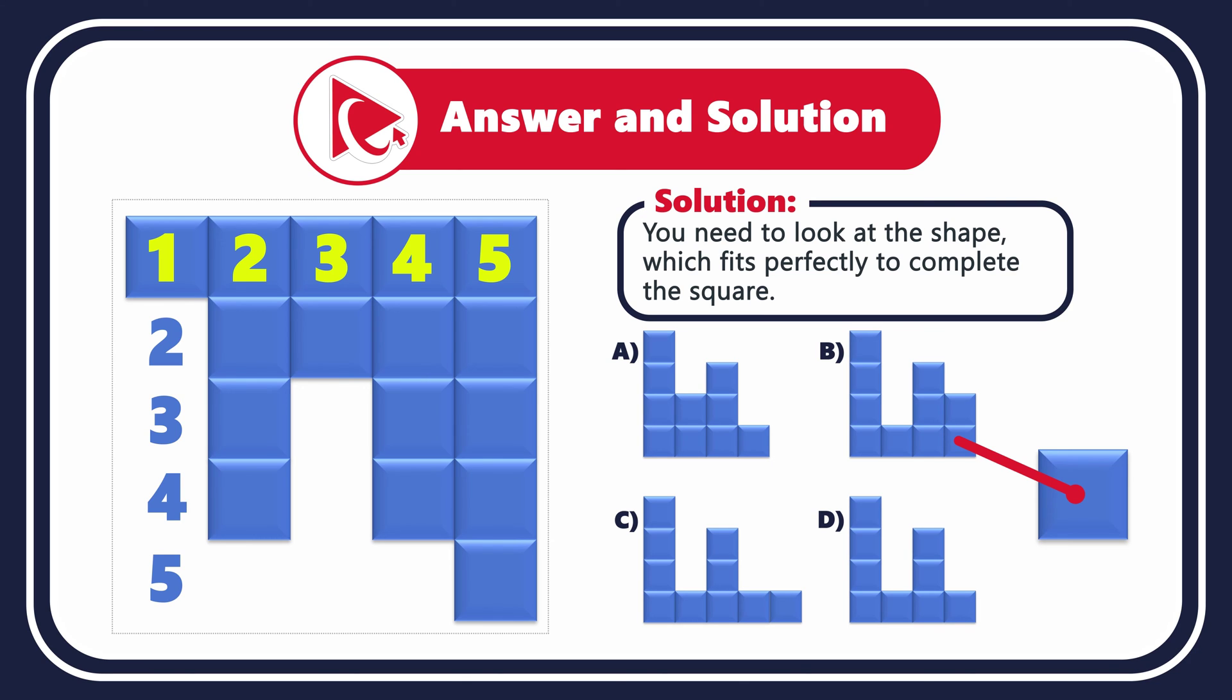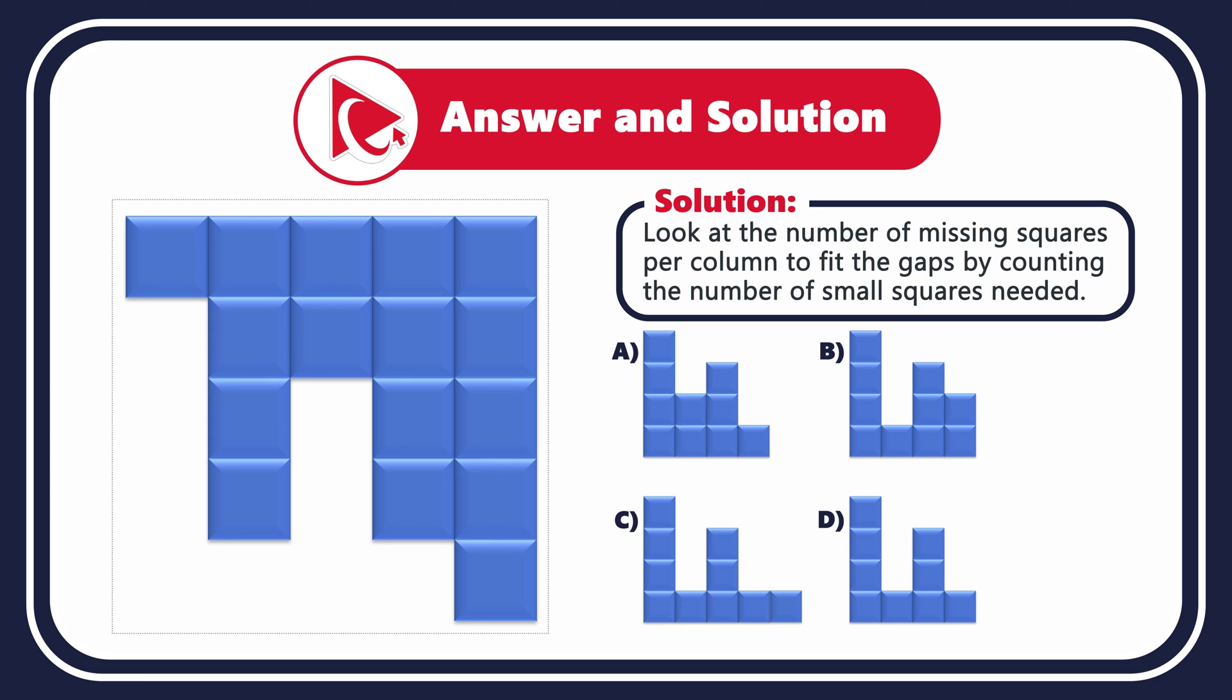The question is how? I think one of the best ways to do it might be to break the large square into columns and then look at how many small squares are missing per column. If we do that, we will see that for the leftmost column, the number of missing small squares would be 4.